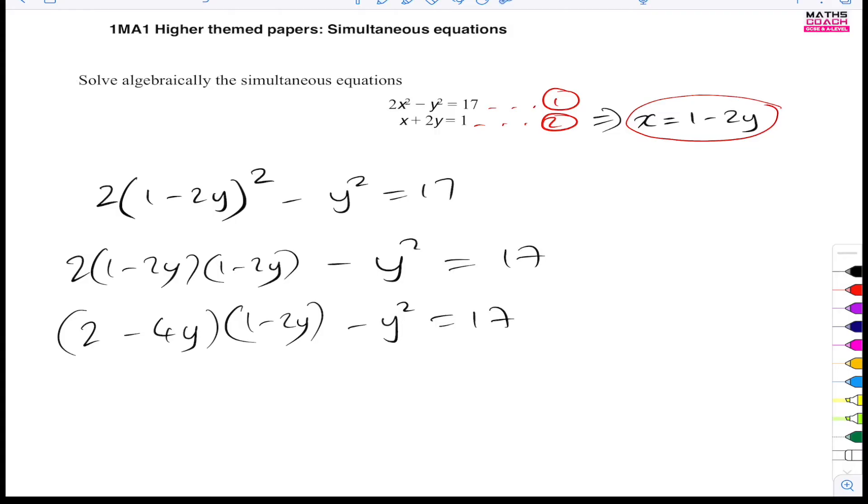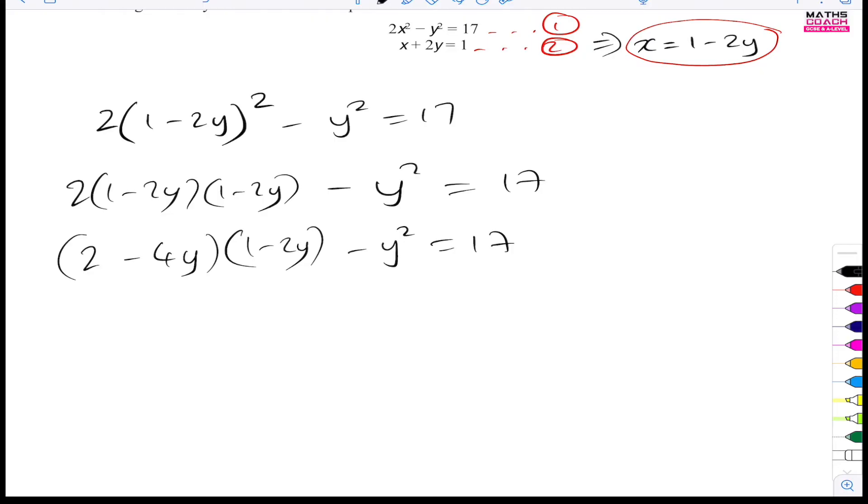And now I will expand these two brackets. All right, so the two will multiply with the one. The two will multiply with the minus 2y, so on and so forth. Let's go ahead and do that. So what is 2 times 1? Two. 2 times minus 2y is minus 4y.